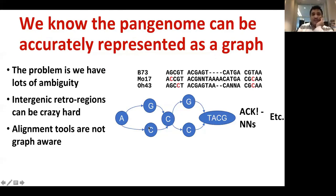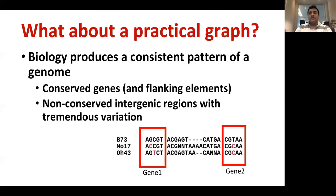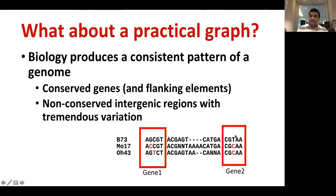This addresses a lot of ambiguity, since intergenic regions are complex and most alignment tools are not aware of graph structure. Biology produces consistent patterns: genes and flanking regions are highly conserved, while non-conserved intergenic regions are tremendously variable. Here is a conserved region representing a gene, and between two genes you can see a lot of variation — insertions, deletions, and structural variation.